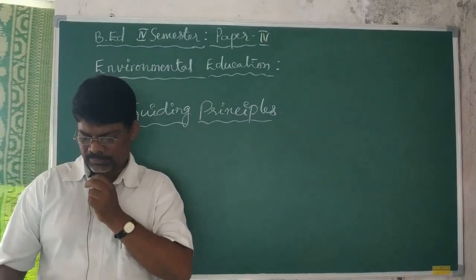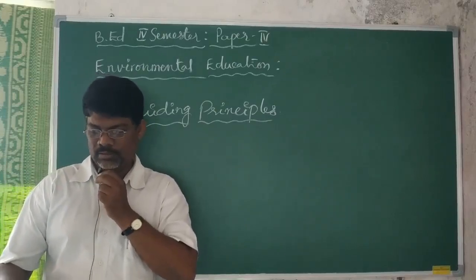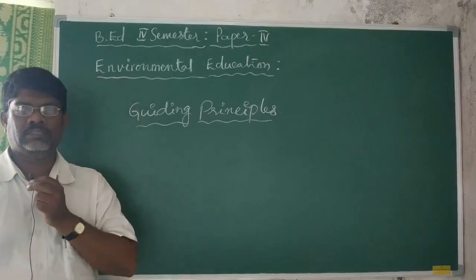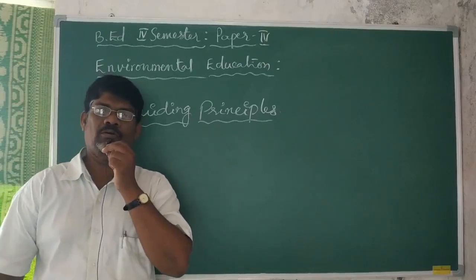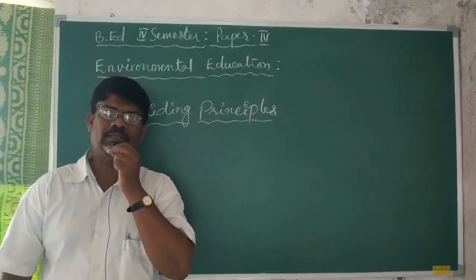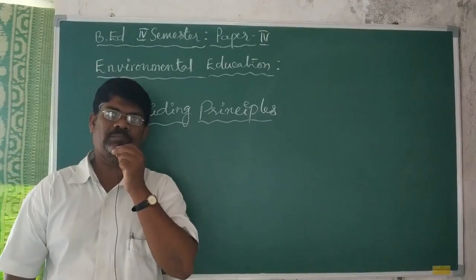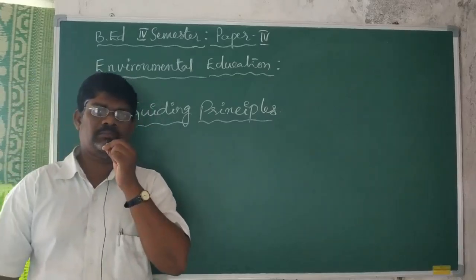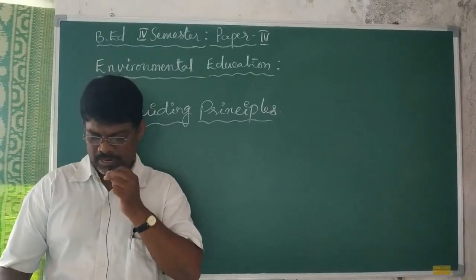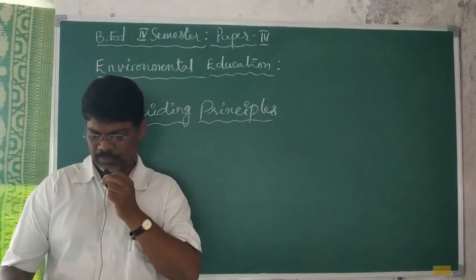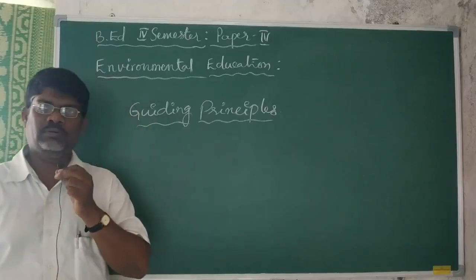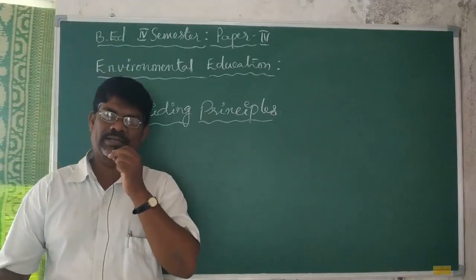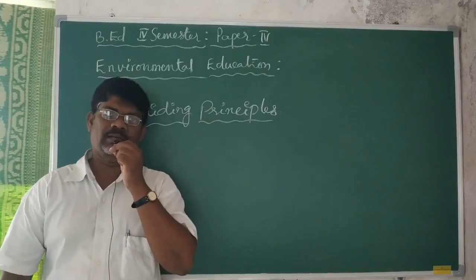The fourth guiding principle is the environmental management principle, which covers mainly how to recycle waste materials in the environment and waste water management. The fifth principle is the 'other' principle, which encompasses cultural, historical, archaeological, and traditional environmental components.